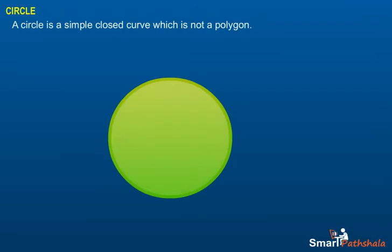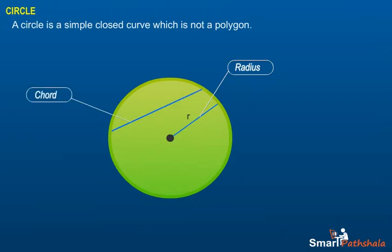Circle. A circle is a simple closed curve which is not a polygon. Every point on the circle is at equal distance from the center. The radius is a line segment joining the center to a point on the circle. The plural of radius is radii.